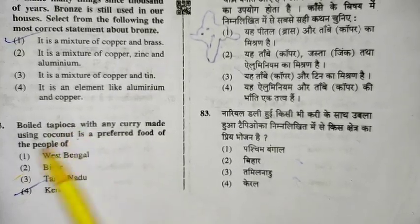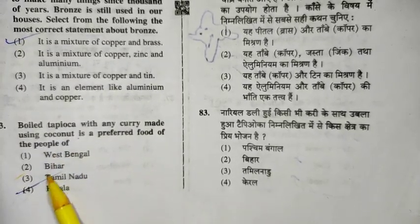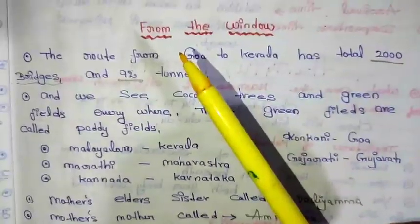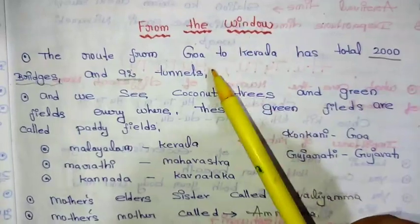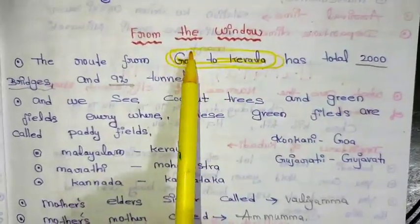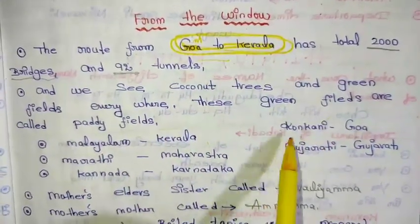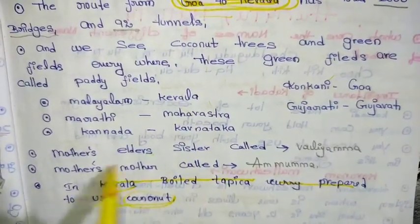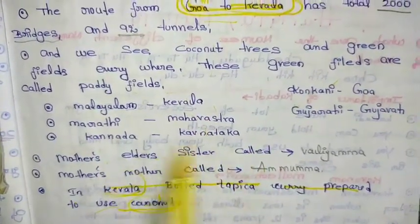I will ask a question about this topic. From the window to Kerala — the food of Kerala is also a topic. We will talk about Kerala, and the last thing is that coconut is a key ingredient in Kerala cuisine. At a Kerala restaurant, coconut-based dishes are common.